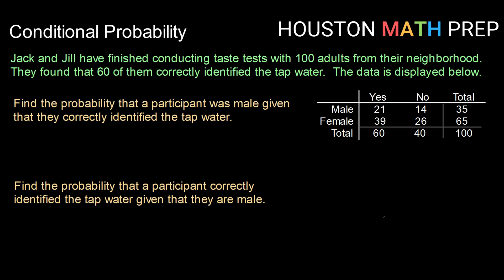Let's say that Jack and Jill have finished conducting taste tests with 100 adults from their neighborhood. They found that 60 of them could correctly identify tap water. The data is displayed below. We want to calculate some probabilities using the data in the table.